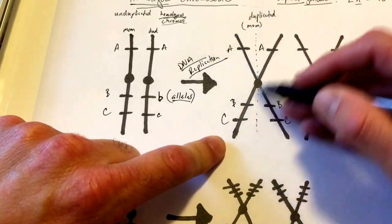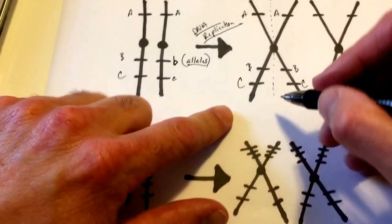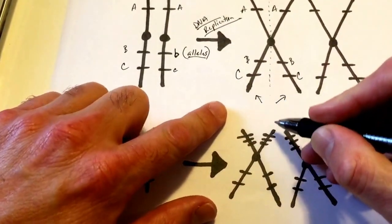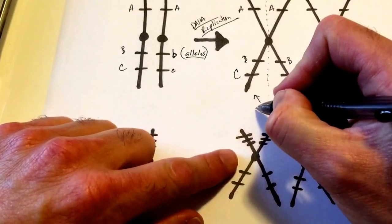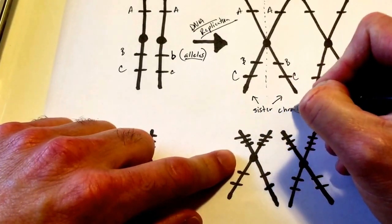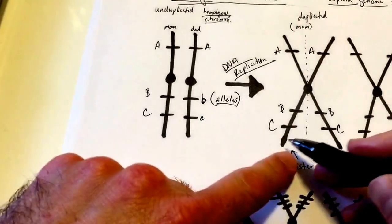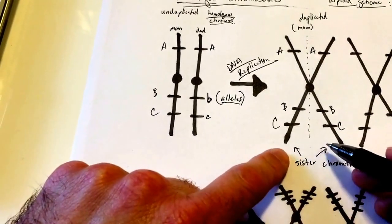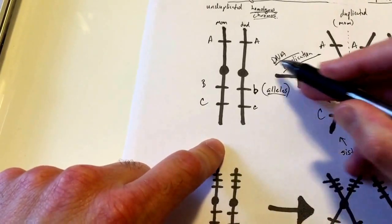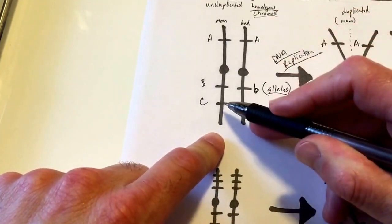These two arms that are a mirror reflection of the other two arms of this duplicated chromosome have a particular name: these are sister chromatids. These duplicated sister chromatids reflect the DNA replication event which has occurred, replicating mom's chromosome.